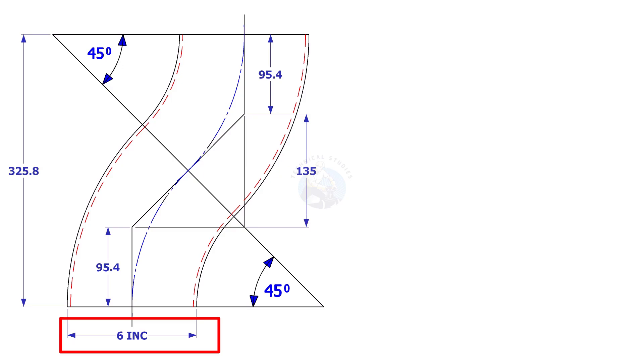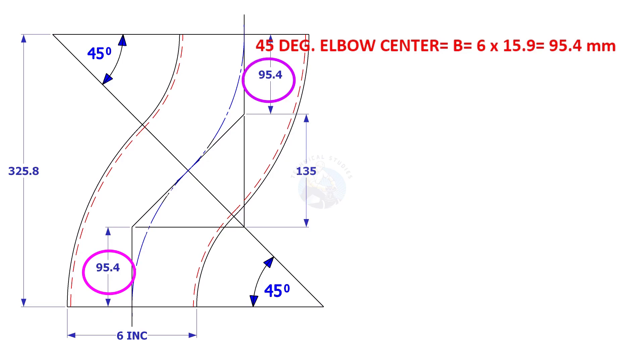In another example, the size of the elbow is six inch. Six inch forty-five degree elbow center is six multiplied by fifteen point nine, which is ninety-five point four millimeters.